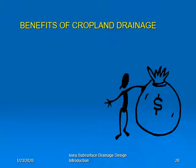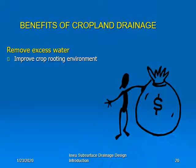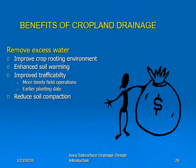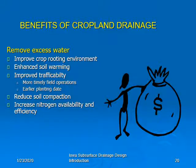Let's look at the benefits of cropland drainage — why do farmers install so many miles of drain tile? Here are some agronomic benefits of improved drainage: it removes excess water, which improves the crop growing environment, enhances the soil warming process in the spring, provides improved trafficability, which results in more timely field operations and earlier planting dates, reduces soil compaction, and increases nitrogen availability and efficiency. You can have denitrification in wet soils. The bottom line is that it increases yields and income, which is a strong incentive to install subsurface drainage in spite of the cost.